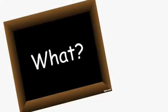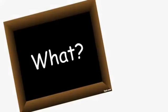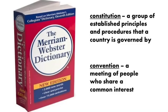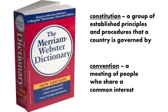Let's start with the what. What is the Constitutional Convention? If you look up both words in the dictionary, here are the definitions you'll find. A Constitution, which we've already looked at more than once this year, is a group of established principles and procedures that a country is governed by. A convention is just a meeting of people who share a common interest.